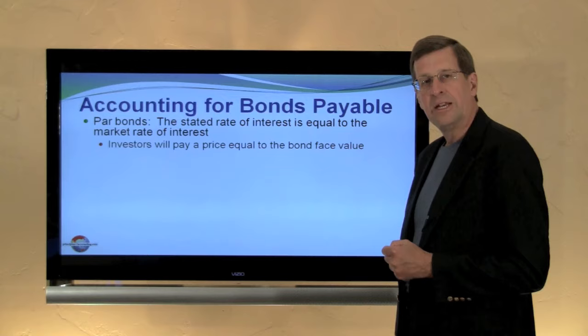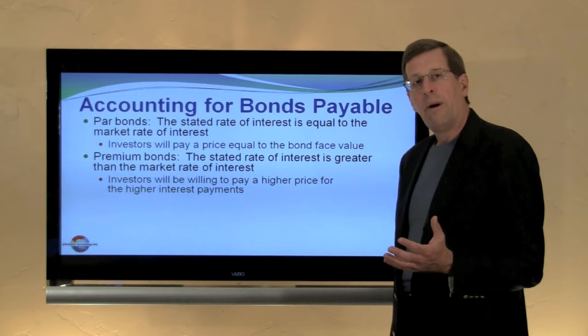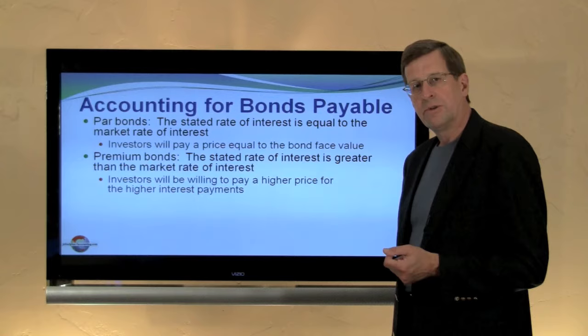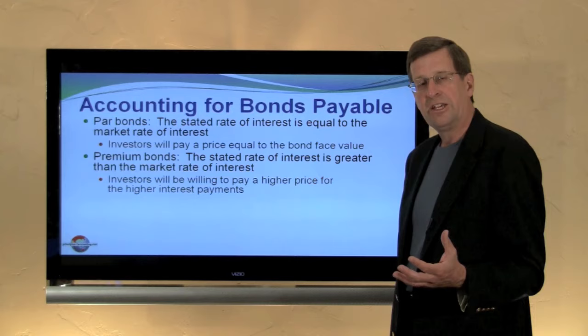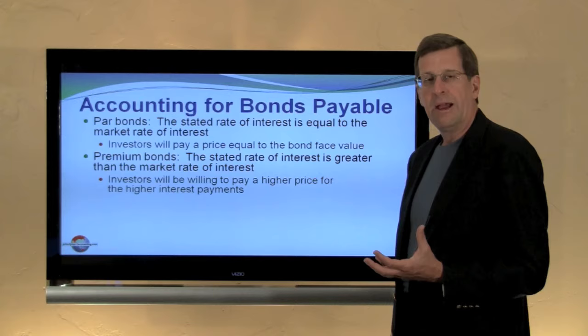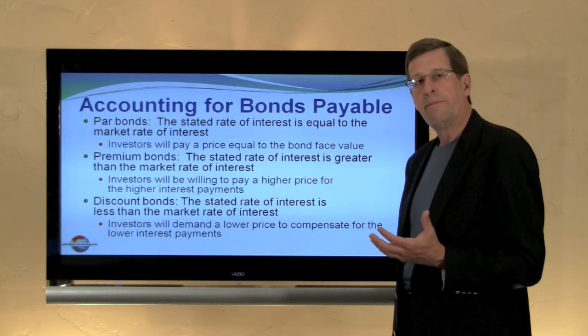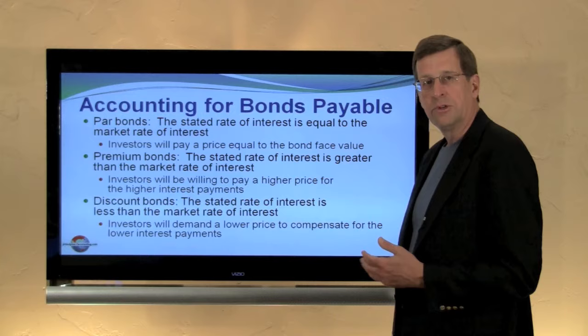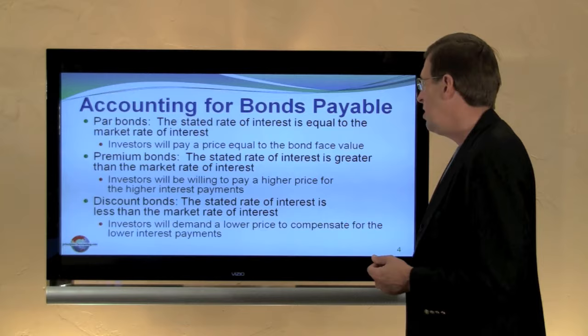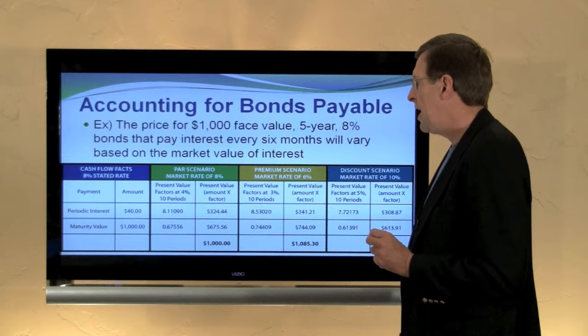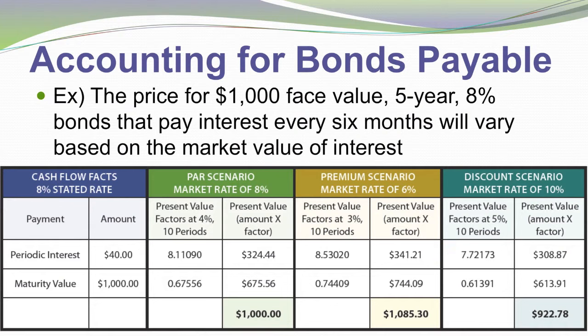Bonds priced at par means their stated rate is equivalent to the market rate of interest at the time they're issued, so investors pay a price equal to the face value. A bond at a premium occurs when the stated rate is greater than the market rate — someone pays a premium because it bears a better rate than the going rate. Conversely, bonds at a discount have a stated rate well below the market rate; they're unattractive, and the only way to entice investors is to sell them at a discount. The specifics of calculating premiums or discounts is a function of the present value considerations discussed in a previous module.